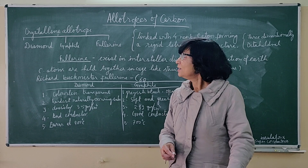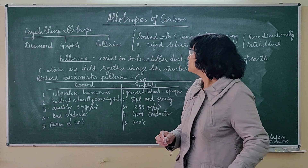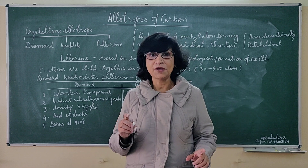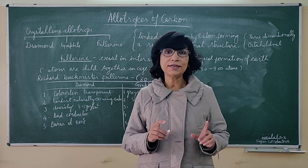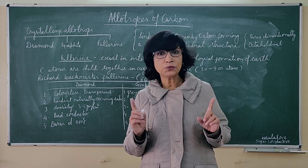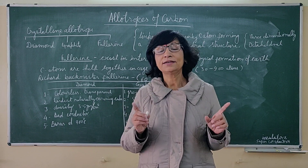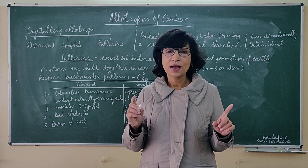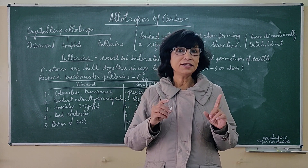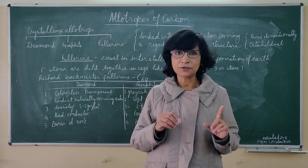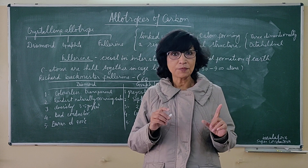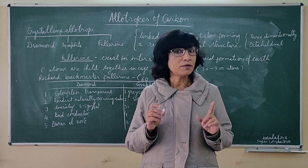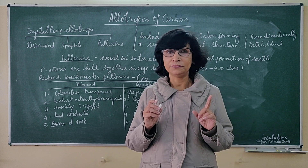Dear students, now we will discuss crystalline allotropes of carbon. We have already discussed that allotropes of carbon belong to two categories: crystalline and non-crystalline. All the three crystalline allotropic forms of carbon are very important from one or another point of view.